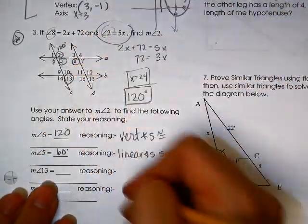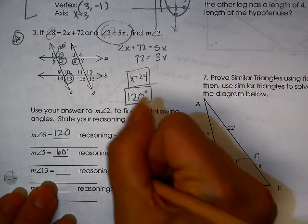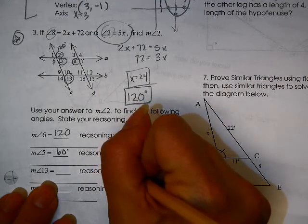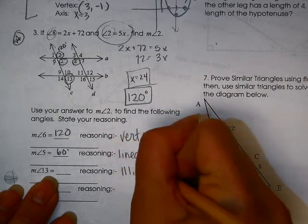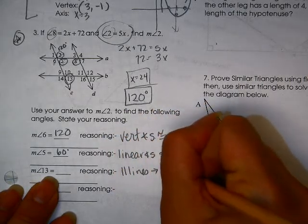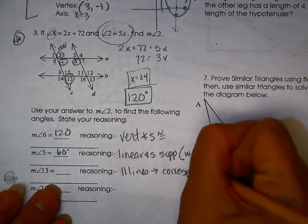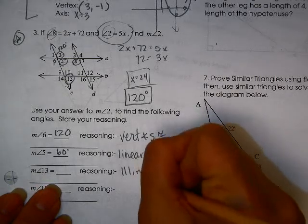13, I'm going to say is corresponding to 13. I'm sorry, corresponding to 5. So we'll say parallel lines. We'll try a little bit of each. Implies corresponding angles are equivalent with 5.